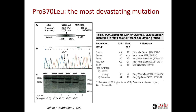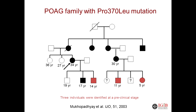We have also reported a very severe mutation for POAG that is the opposite example — it has been found in every population studied so far all over the world, and is always found associated with a very severe form of the disease. In our cohort, anybody who had this mutation was blind by the time they were 18 years old. This particular mutation was found in a family I would like to elaborate on.